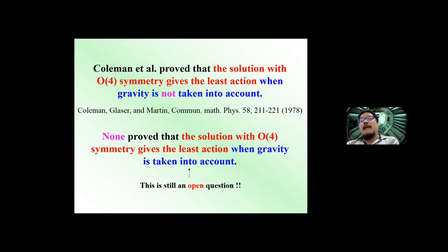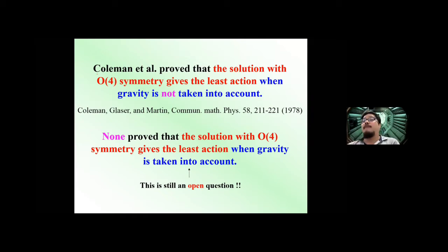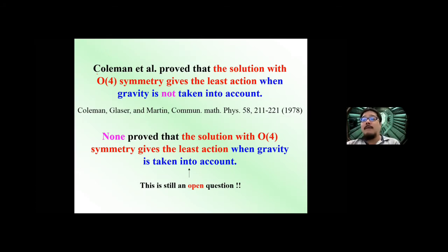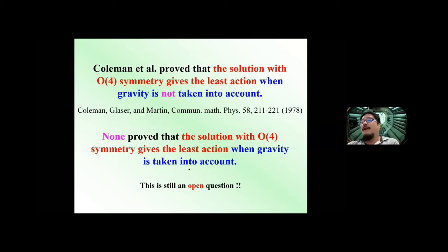To stress again: without gravity, Coleman et al. proved that the O(4)-symmetric solution gives the least action, so if you're interested in the dominant path you only need to consider the O(4) solution as long as the background is homogeneous. With gravity, this argument is still a completely open problem — no one has proved it. So young people, please try this question.